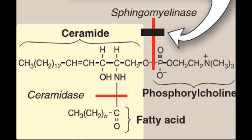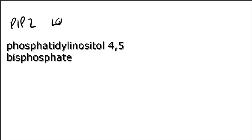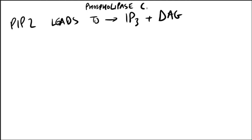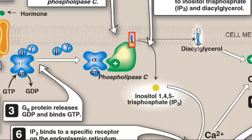Here you can see the action of sphingomyelinase followed by ceramidase. The phosphorylation of membrane-bound phosphatidylinositol produces phosphatidylinositol 4,5-bisphosphate (PIP2). The degradation of PIP2 by phospholipase C occurs in response to the binding of a variety of neurotransmitters, hormones, and growth factors to receptors on the cell membrane.